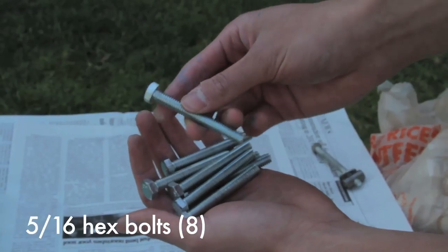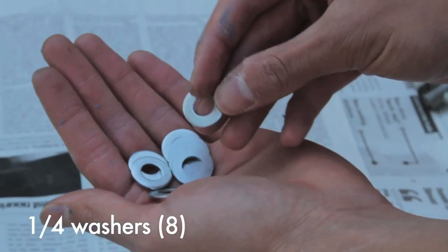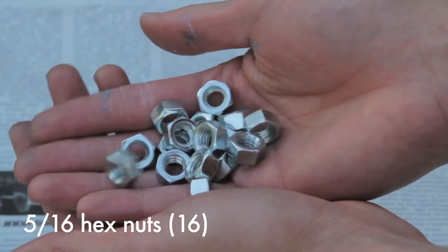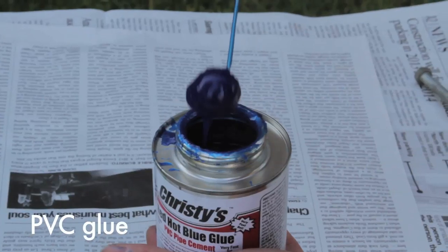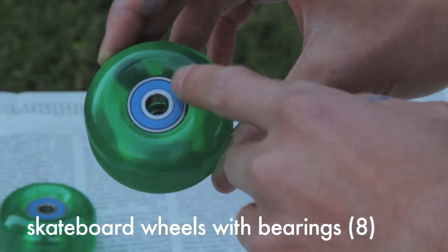Then you'll need eight 5-16th hex bolts, make sure these are 2.5 inches long, eight 1-4th washers, 16 5-16th hex nuts, PVC glue, and eight skateboard wheels with bearings. I've already put mine in.